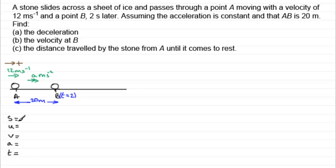Well we know that the displacement S is going to be 20 meters. It would be the same as the distance travelled because it's moving in the positive sense. U, the initial velocity, well that would be 12 meters per second. The final velocity, well we don't know that at the moment. Acceleration, well we've got to find that. And T, the time, we know that it's 2 seconds.